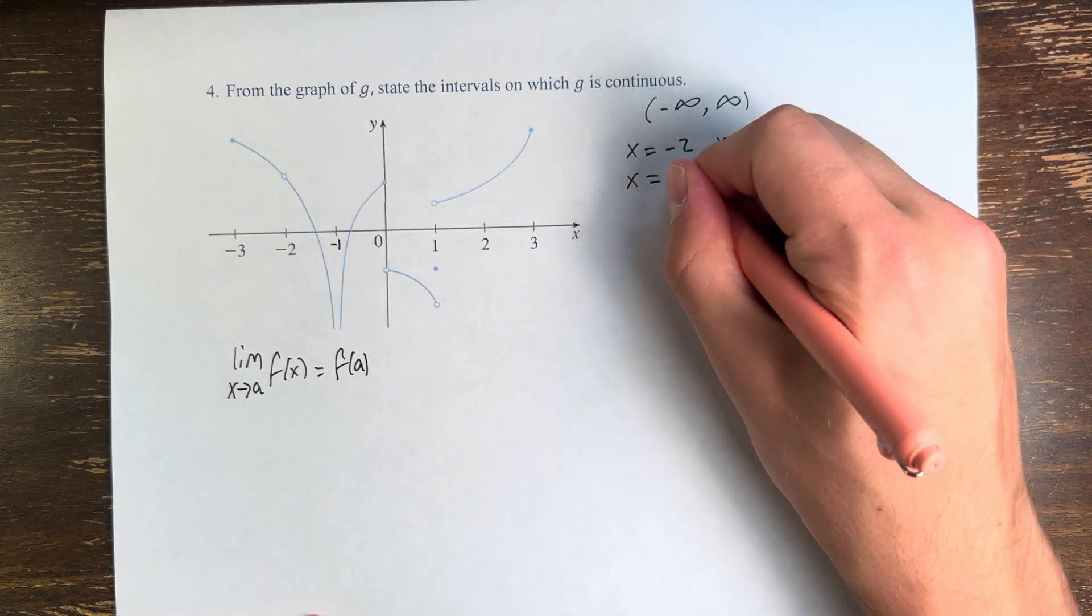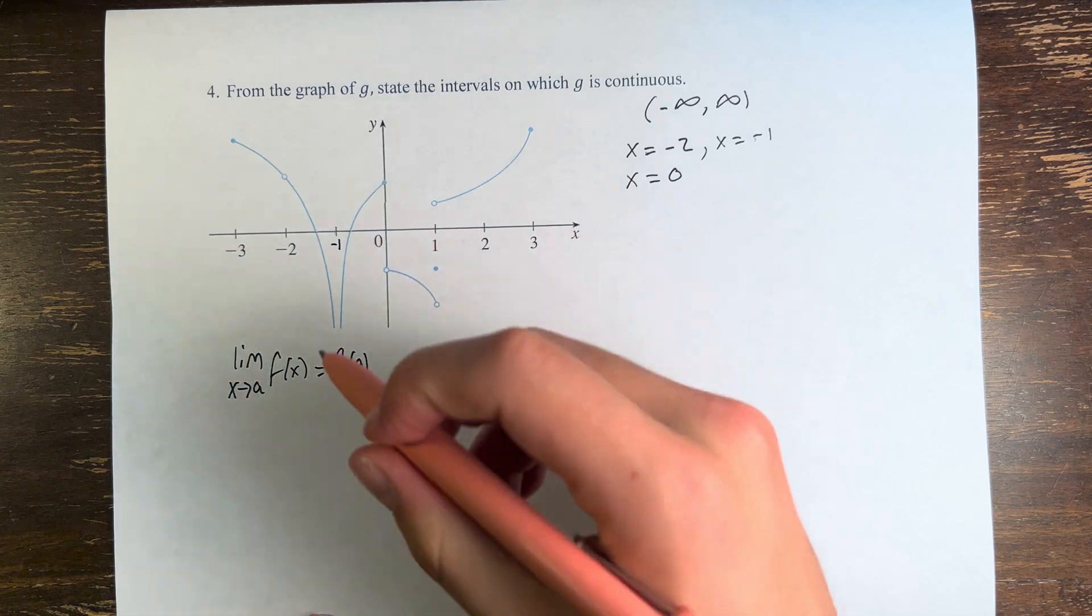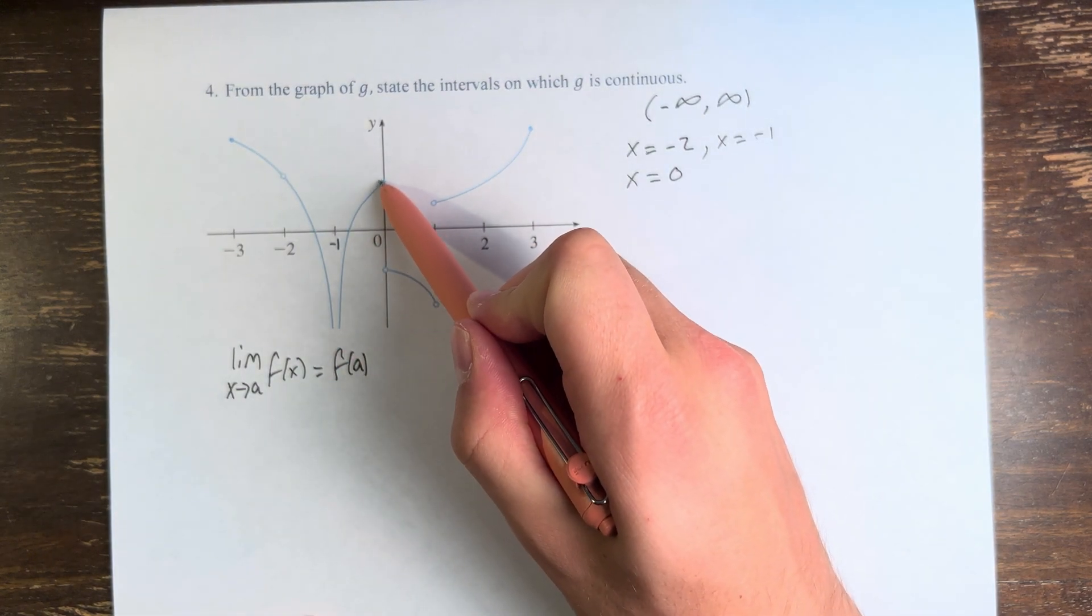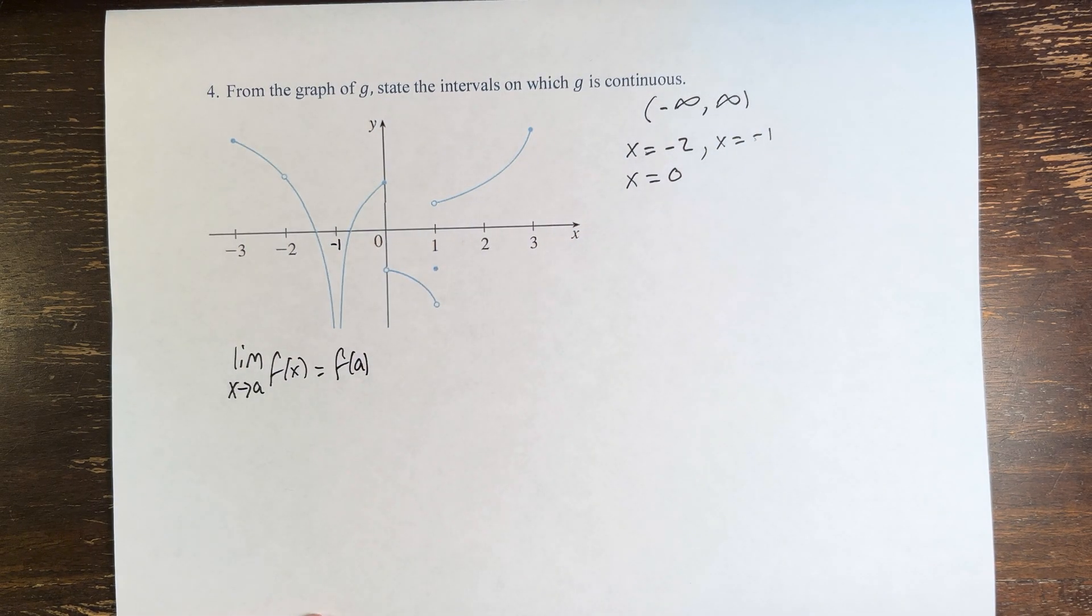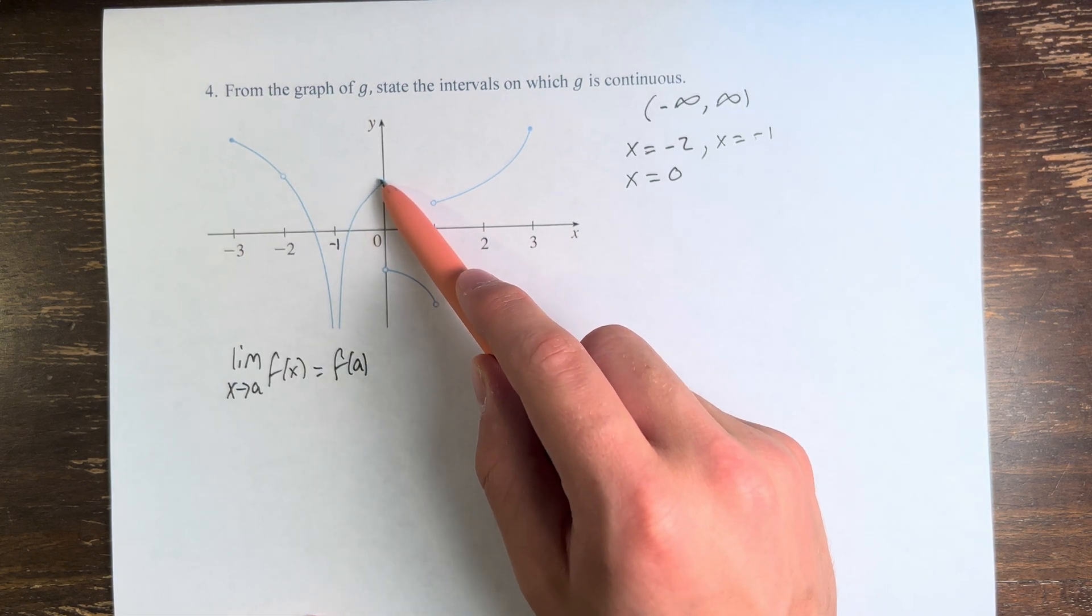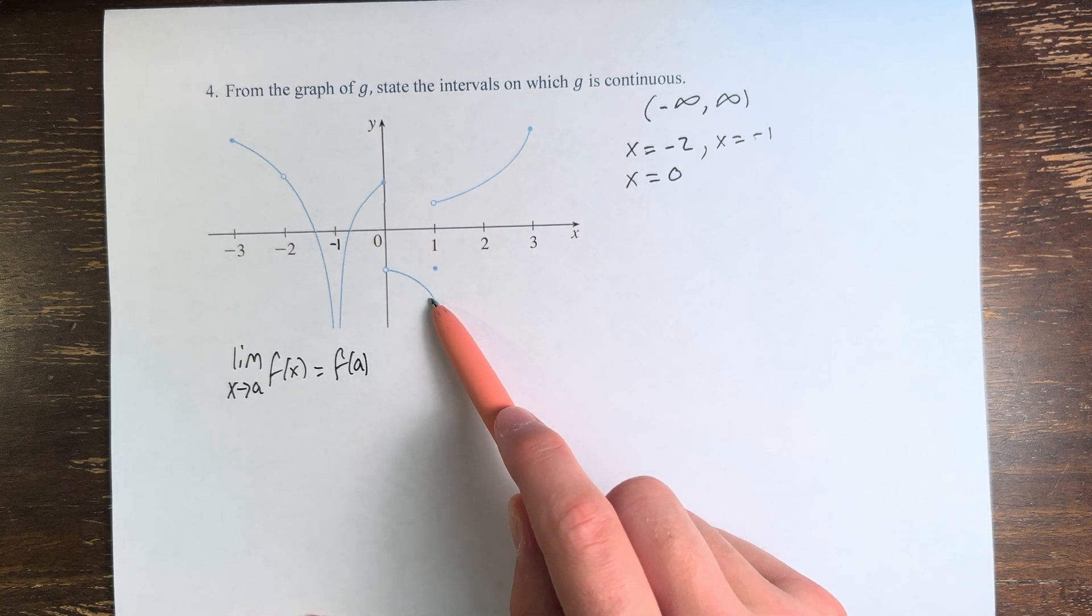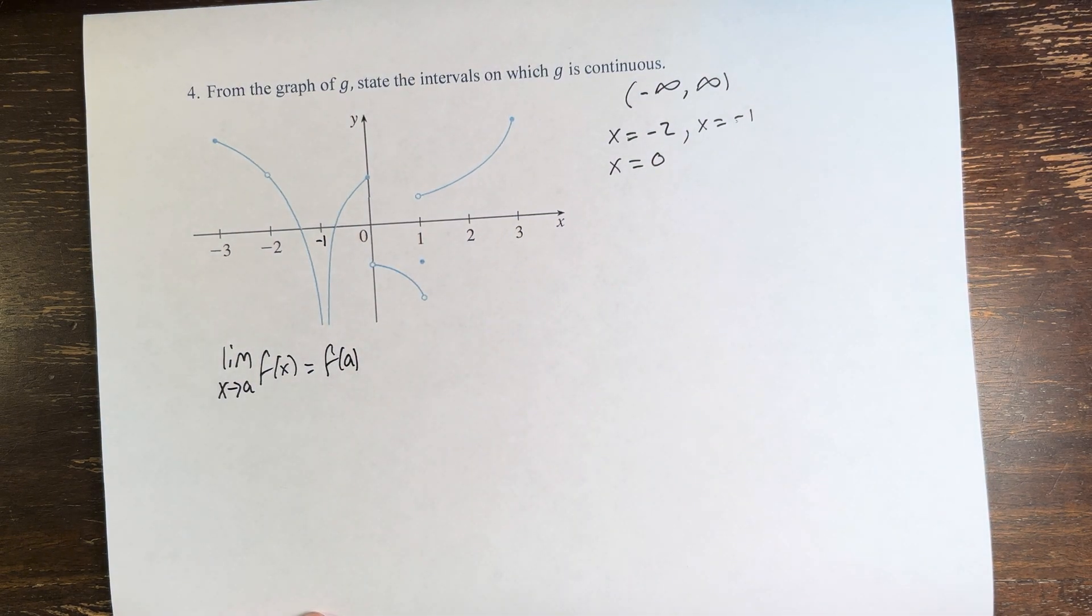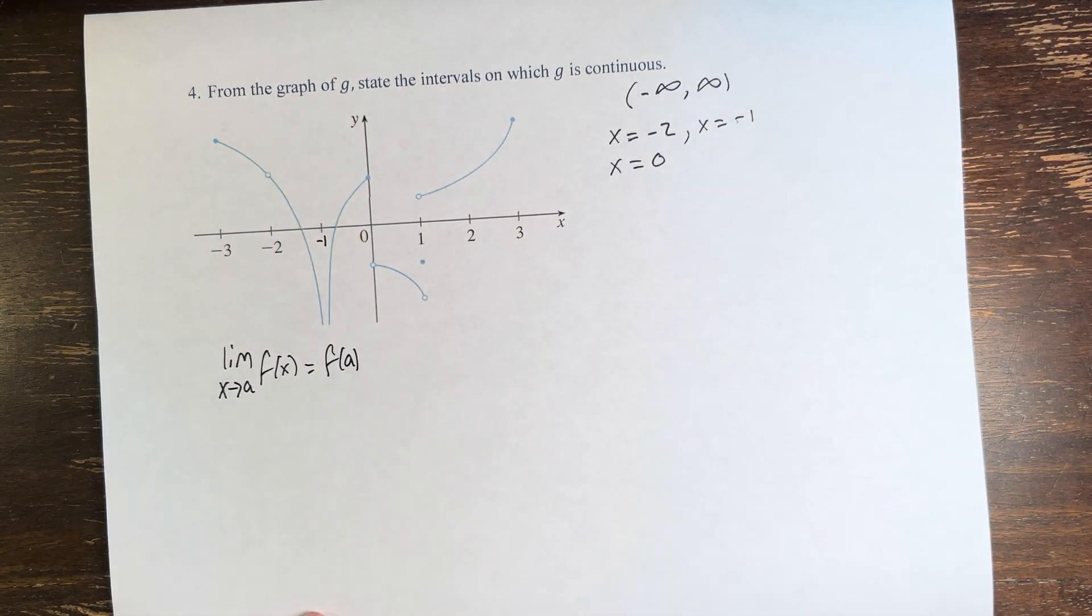That's opposed to x equals 0, our next point, where we do have a value of the function, but we can see from the right, we're not approaching that value. Remember, shaded in means the function equals that value. Open circle means it doesn't equal that value. From the right, we are not approaching that value, so the function is discontinuous.